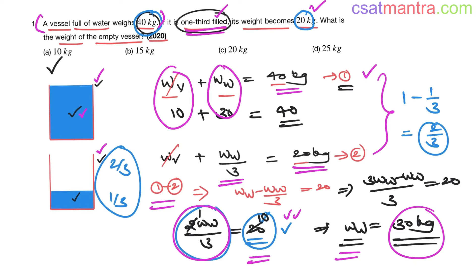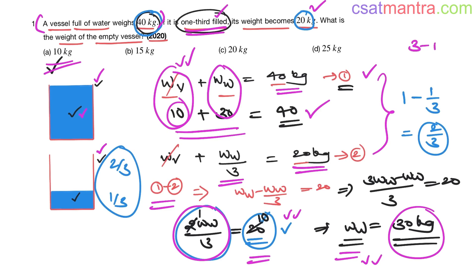So weight of vessel = 40 − 30 = 10 kg. Our answer is A. Questions from the algebra chapter will be like this — application oriented. Split the question sentence by sentence, form the equations, eliminate unknowns. Three to four questions can be expected from algebra in the exam — easy to moderate in nature.